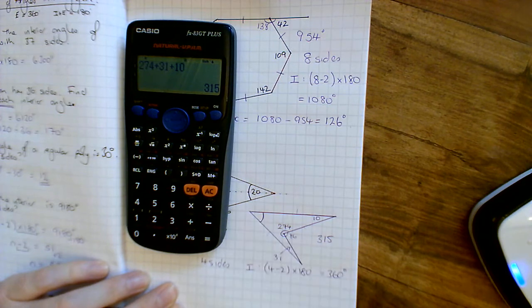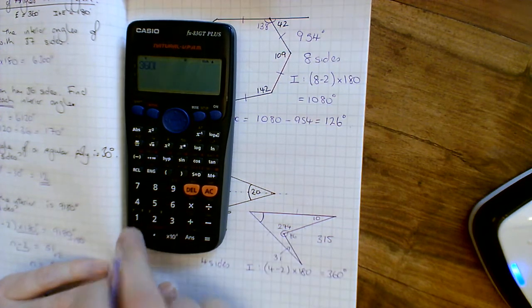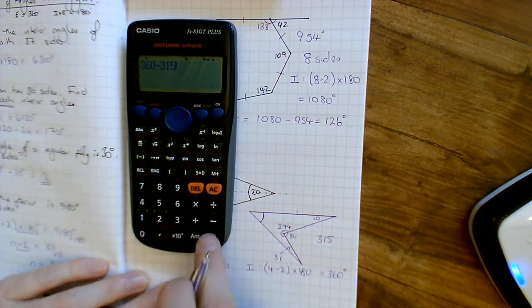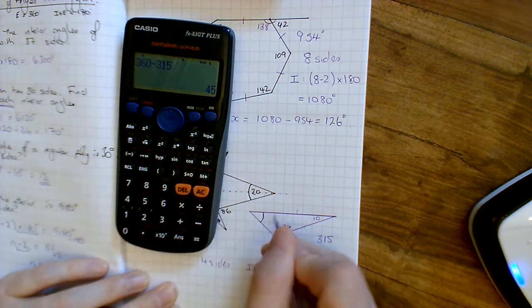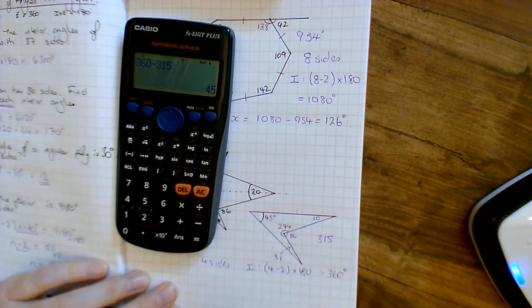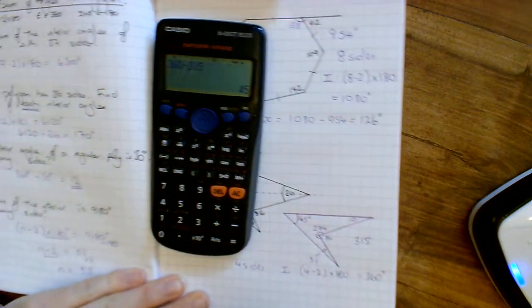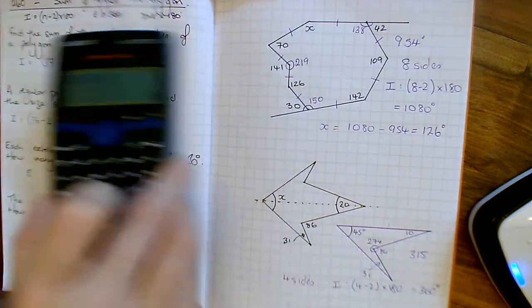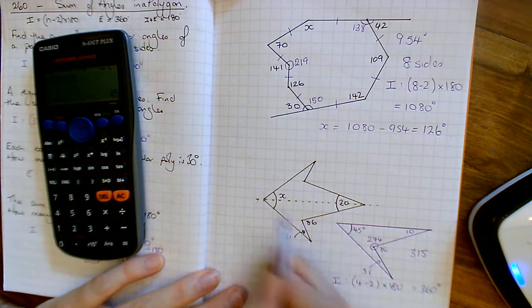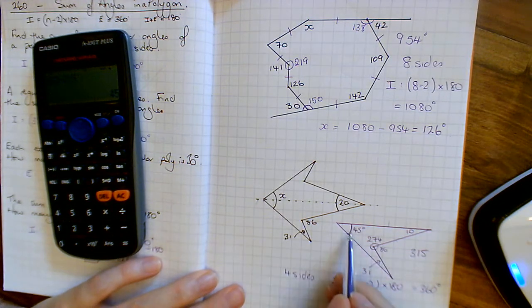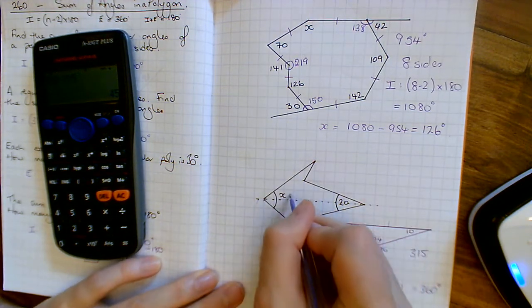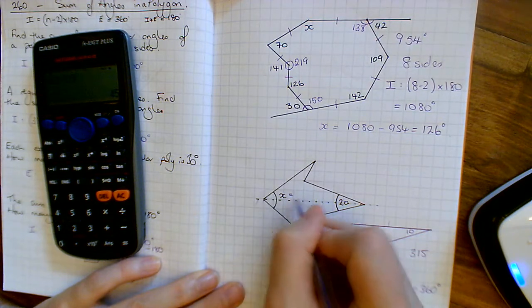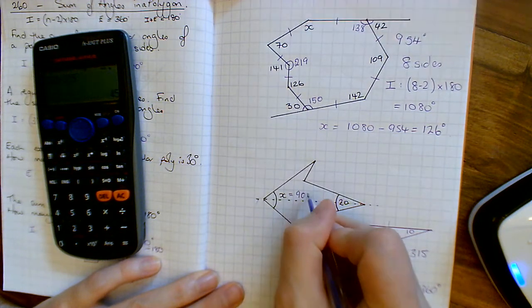So this angle here is going to be 360 take away 315. Okay, so that's got to be 45 degrees in there. Now if I go back to the actual question, what I noticed is I actually just chopped that in half, didn't I? So it's not 45, x isn't 45, x must be two 45s because they're both the same, x must be 90 degrees.